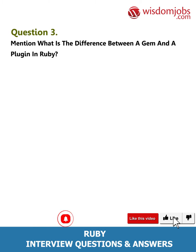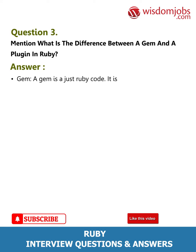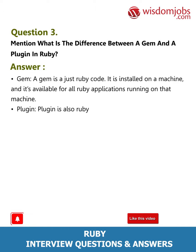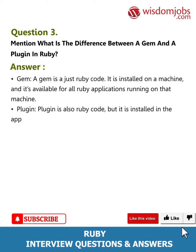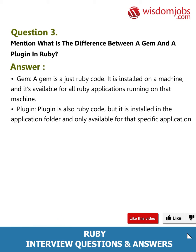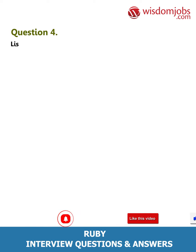Question 3: What is the difference between a gem and a plug-in in Ruby? Answer: A gem is just Ruby code; it is installed on a machine and is available for all Ruby applications running on that machine. A plug-in is also Ruby code, but it is installed in the application folder and is only available for that specific application.